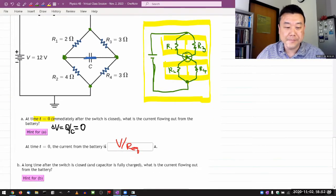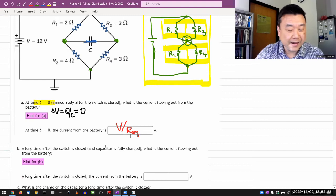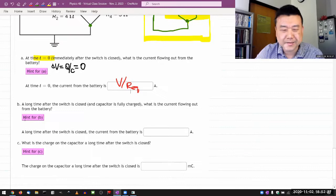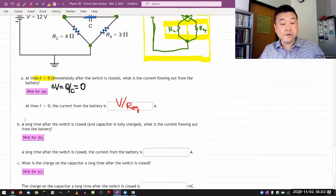Now I'm thinking of part C, which is a little bit more complex than parts A or B. But parts A and B are kind of simple. So let me do part B, which is a long time after the switch is closed.